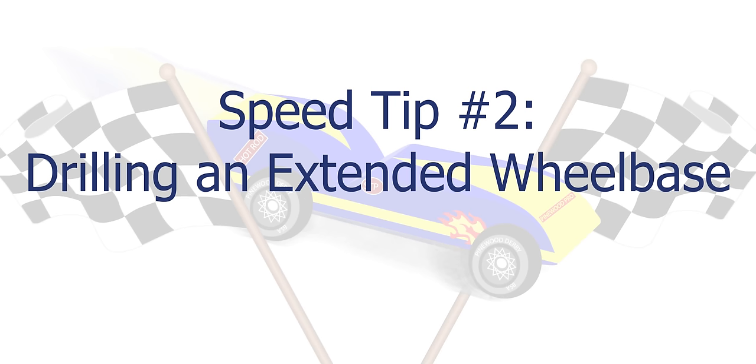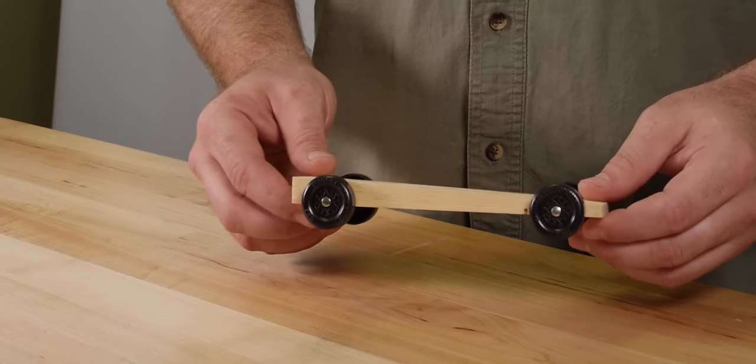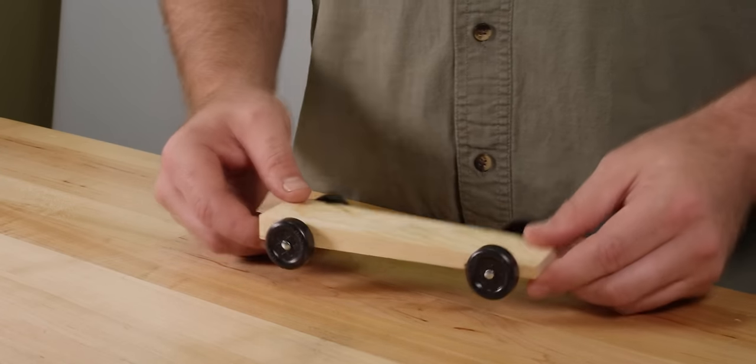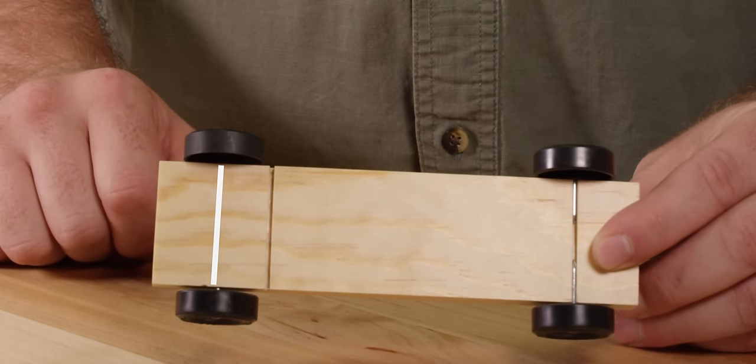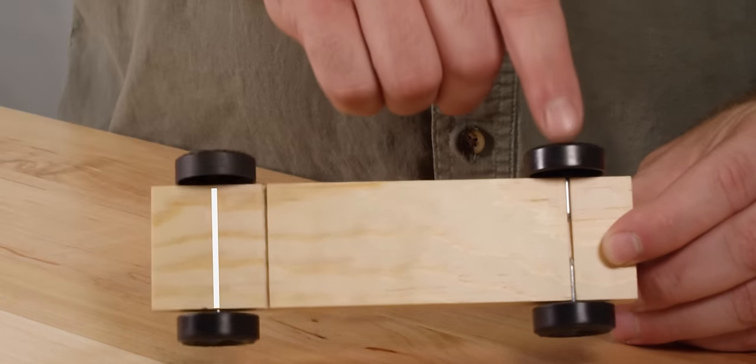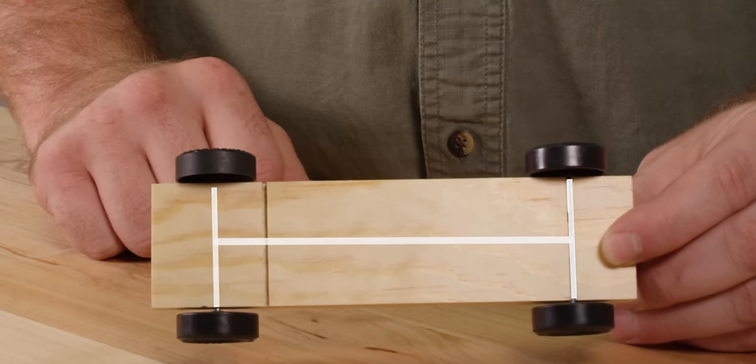Creating an extended wheelbase. What do we mean by an extended wheelbase and why would you want an extended wheelbase? Quite frankly, the extended wheelbase means that the front and rear axles are closer to the ends of the block and are exactly the same distance from the ends of the car block.